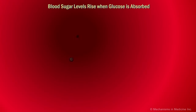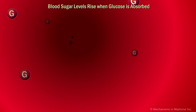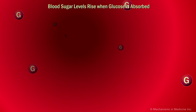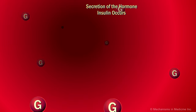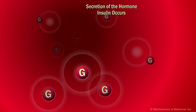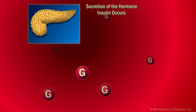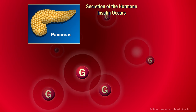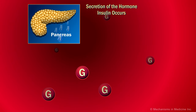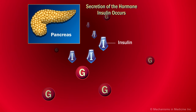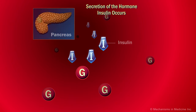Once absorbed into the bloodstream, glucose circulates, causing the blood sugar level to rise. An increased level of blood sugar sends a signal to the pancreatic beta cells, which respond by secreting the hormone insulin into the circulation.